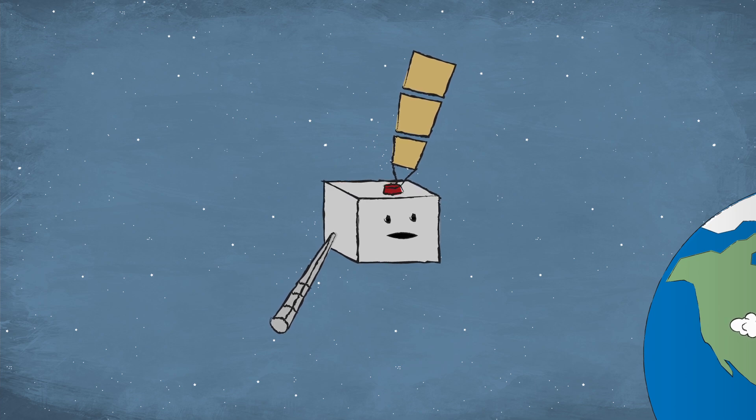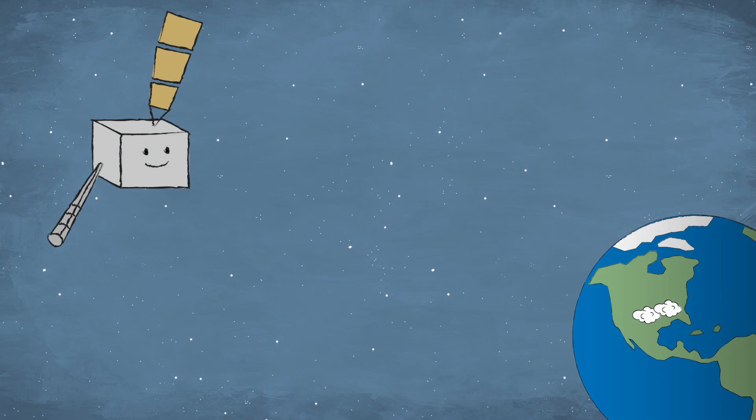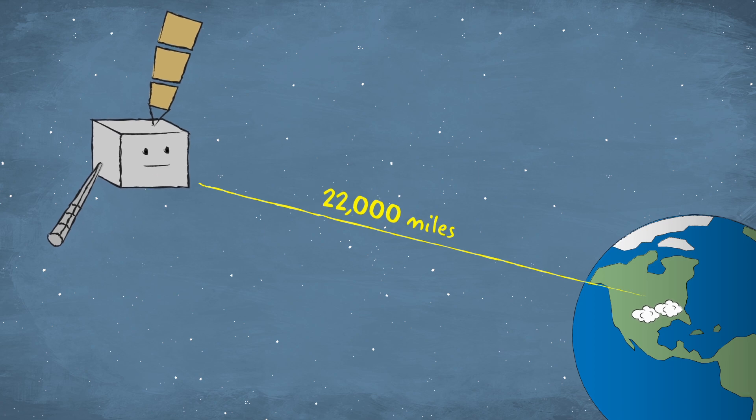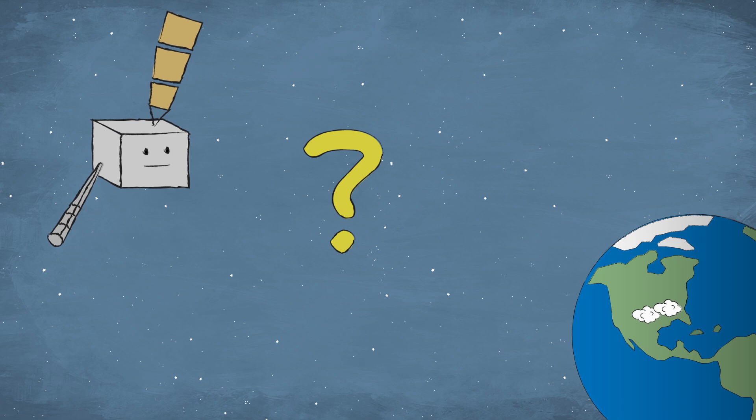I'm a GOES series weather satellite and one of my jobs is to keep an eye on Earth's weather as I orbit above. But I'm 22,000 miles above Earth. How does your local weather forecaster know what I see all the way up here?